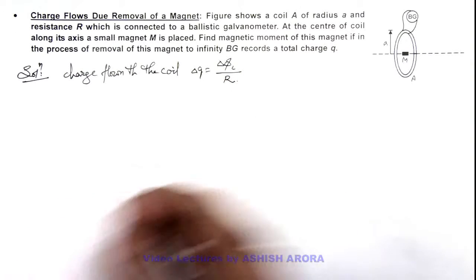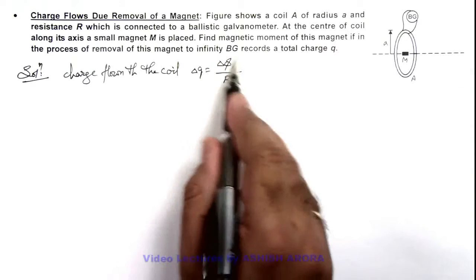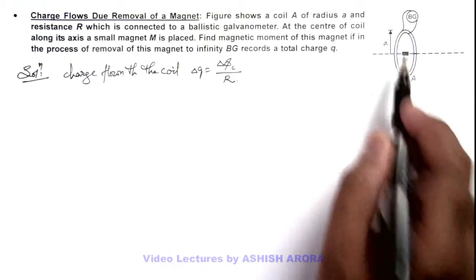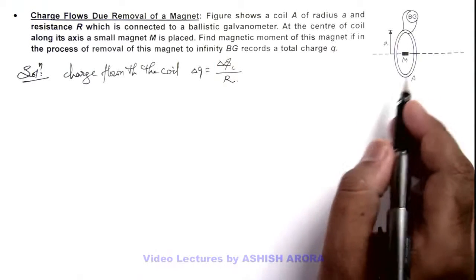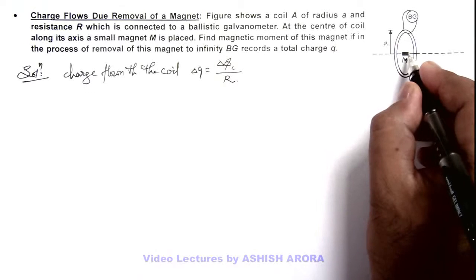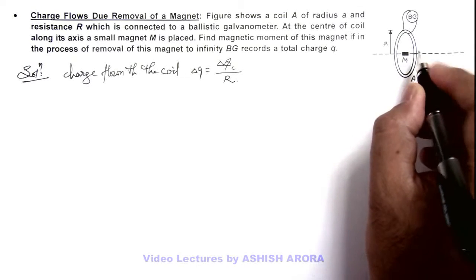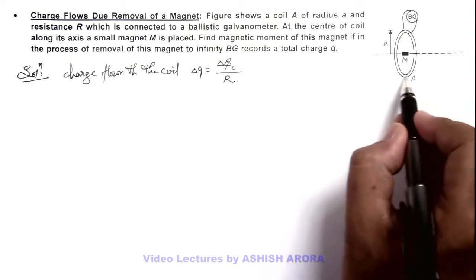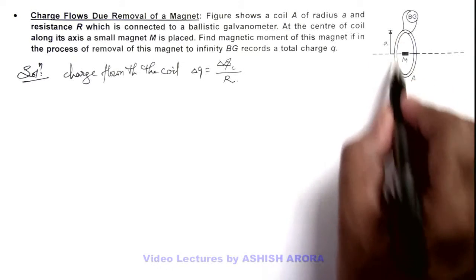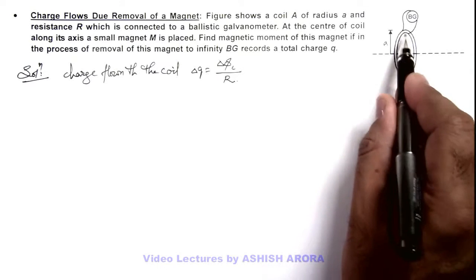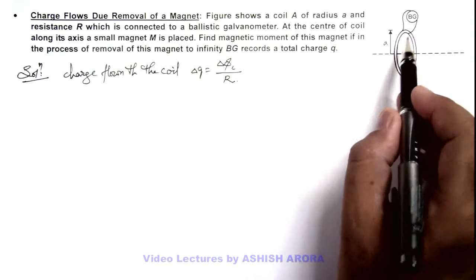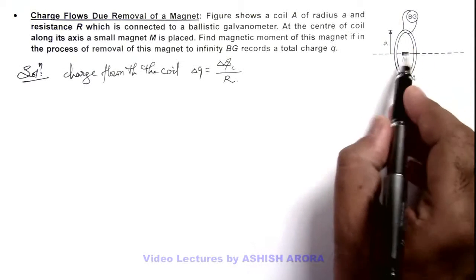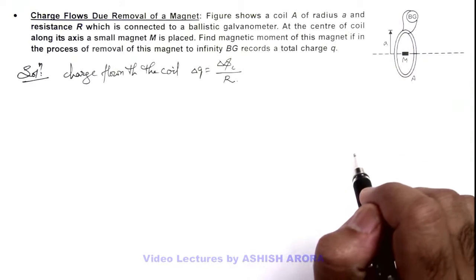So here we first need to calculate the linked magnetic flux due to this magnet which is passing through the coil. We can see that the magnetic flux passing through the circular area of the coil is the same as the flux passing from radius a to infinity, because whichever flux is passing through the area of the coil, the same flux will also be passing through the surrounding region from radius a to infinity.